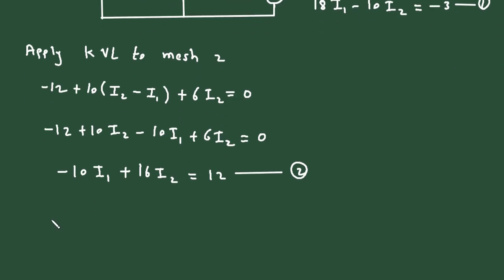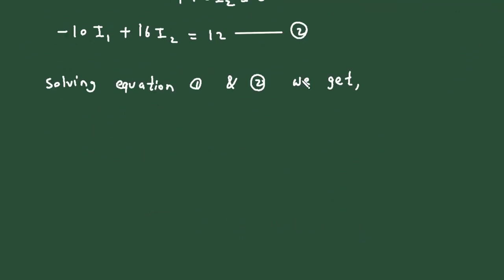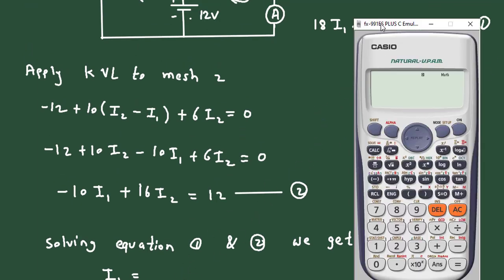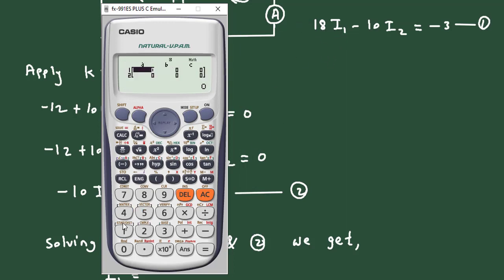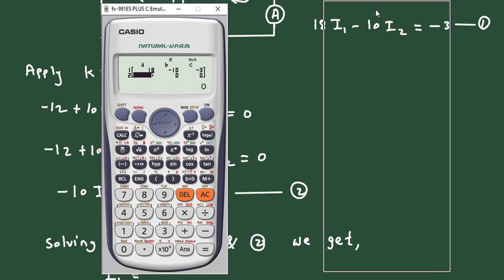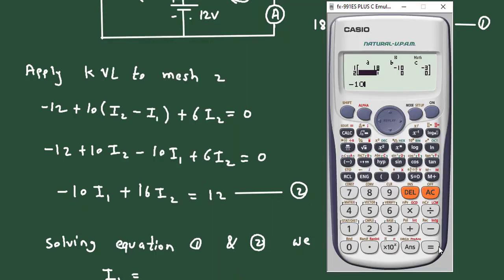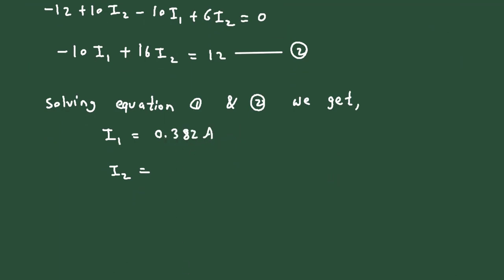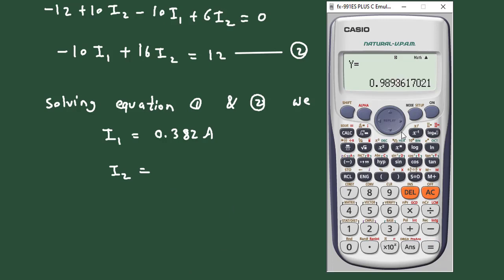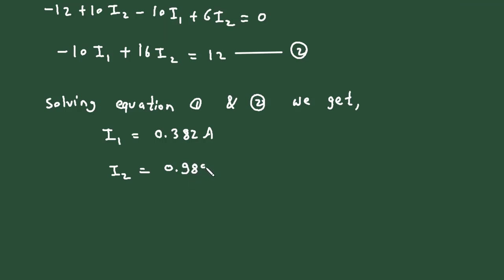Now we will solve equation number 1 and equation number 2 simultaneously. Using the determinant method with coefficients 18, minus 10, minus 10, 16 and constants minus 3 and 12, we get I1 equals 0.382 ampere and I2 equals 0.989 ampere.